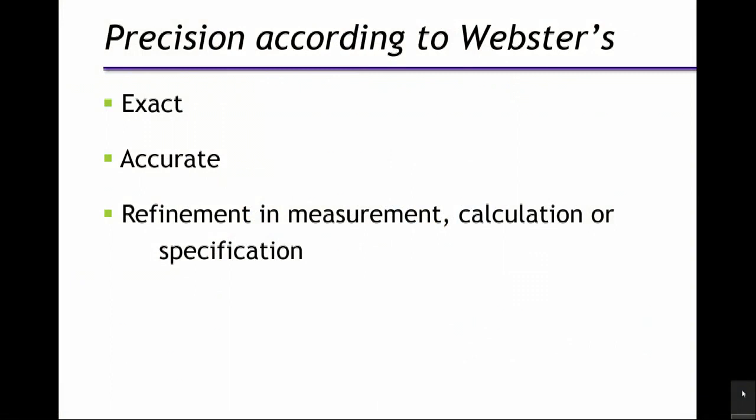I'll start off with the definition of precision medicine, and apparently others have done this. Precision is usually defined as exact, accurate, or refinement in a measurement, calculation, or specification. I don't think that the vast swath of medicine is accurate — at least, not accurate in the sense that an engineer might speak of accuracy. So the term precision medicine is actually slightly grating to me, and perhaps I can just explain to you why.